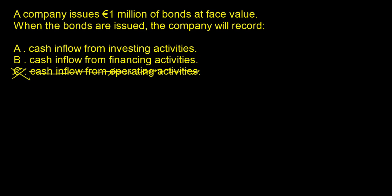You might be tempted to choose investing activities because you see the word 'bonds,' but you'd be wrong — the words have meaning. Investing activities are activities related to us buying or selling assets we normally use in our core business: equipment, machinery, lumber, computers. Those are investing activities — bonds are a different thing.